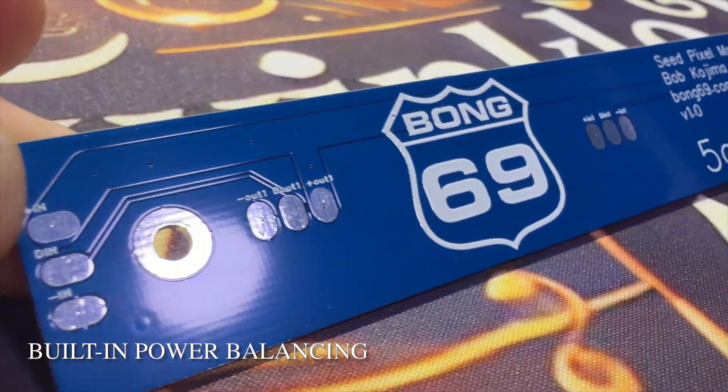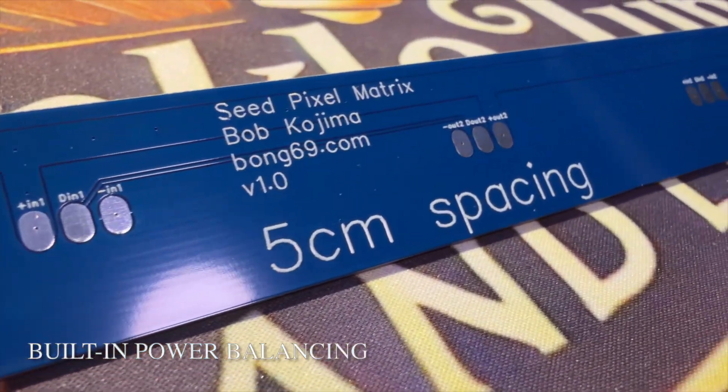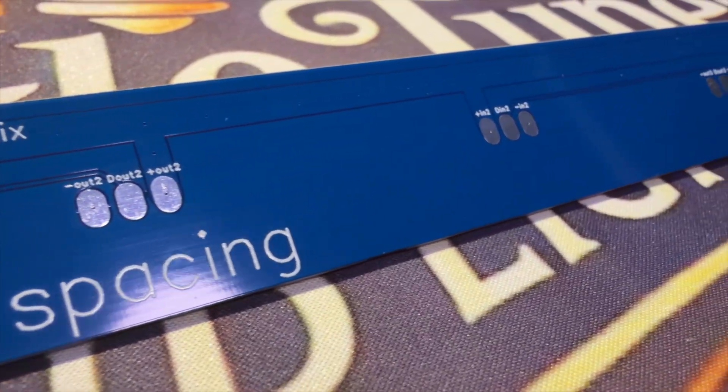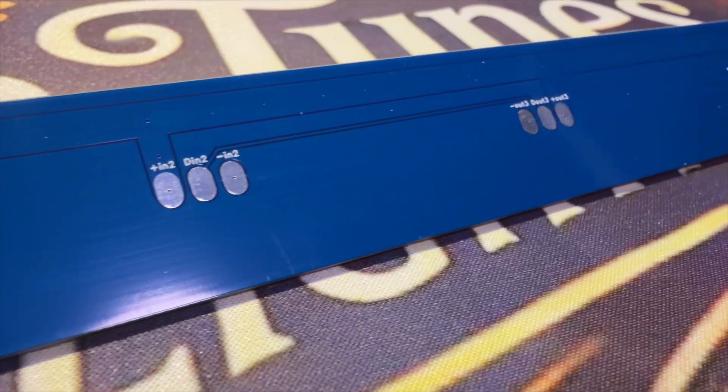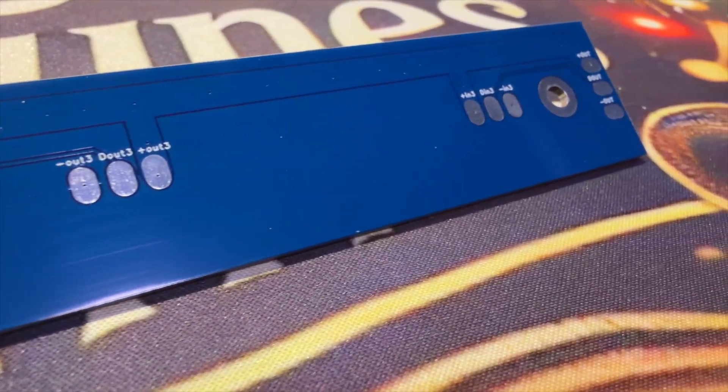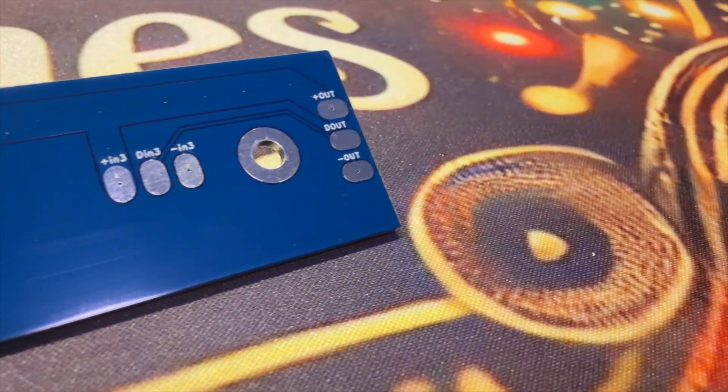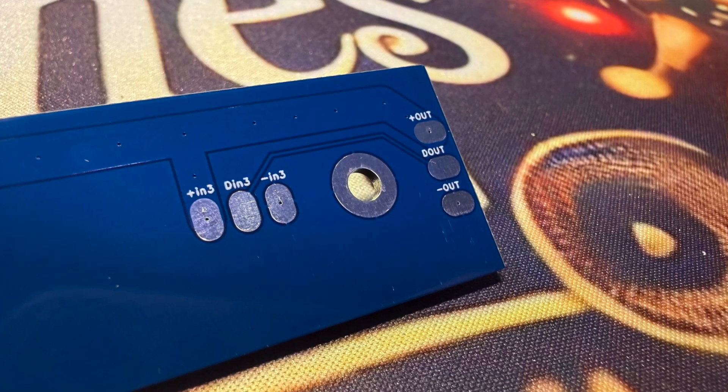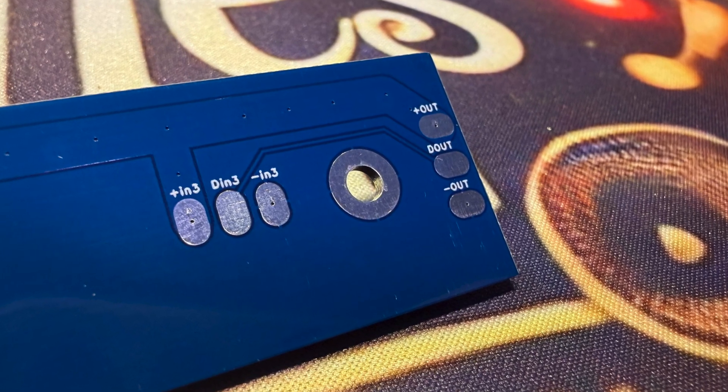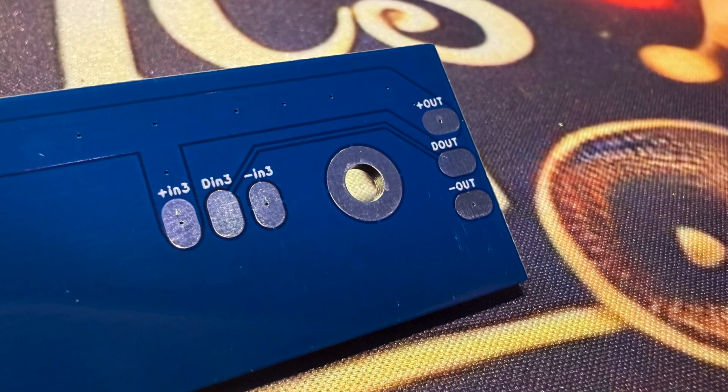This is the part a lot of people miss. Power travels all the way down the PCB. That means your pixels stay consistent from the first one to the last one. No weird dimming, no voltage drop, no injecting every few feet. The board basically fixes all of that for you.